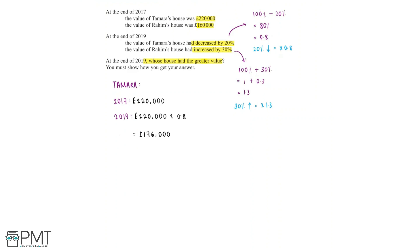Now we can find out how much Raheem's house was worth at the end of 2019. At the end of 2017, Raheem's house was worth £160,000. By 2019, this had increased by 30%. So we'd do £160,000 multiplied by 1.3, which is equal to £208,000.